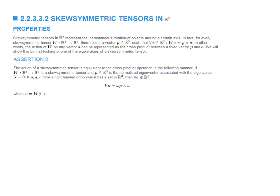Another very important property of skew-symmetric matrices is that they have an axial vector, and their action on arbitrary vectors is similar to taking the cross product with that axial vector. For any general vector A, the action of W on A is similar to taking the cross product of omega P cross A, where we define omega as WQ dot R.